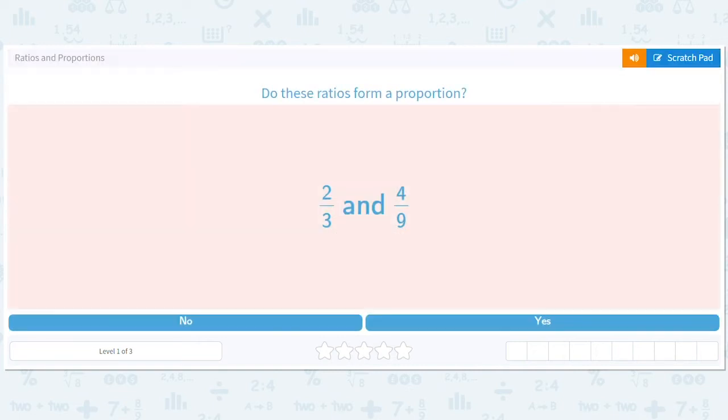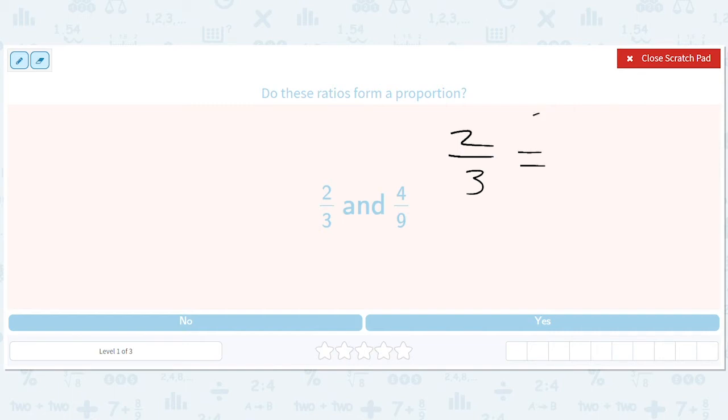So what's a way of doing this? Well, there's a simple trick you can do, which is two over three. You want to know, does it equal four over nine? And once we know this trick, it'll be really fast.